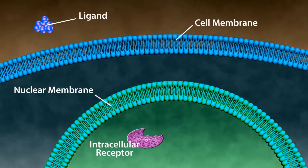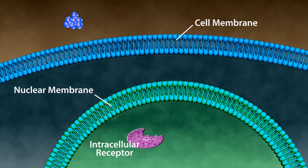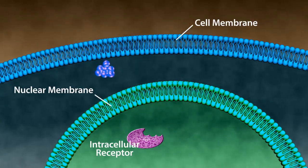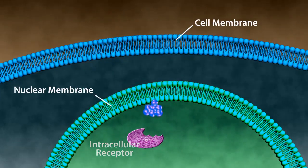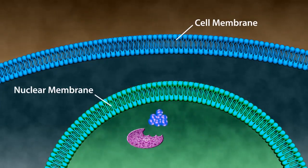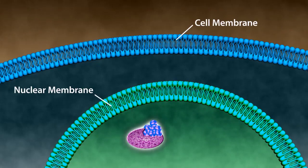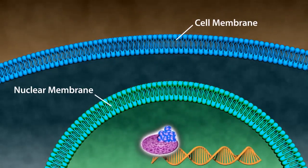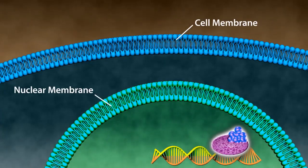Intracellular receptor. Ligands that pass through the cell membrane enter the cell and into the nucleus, crossing the nuclear membrane. After entering the nucleus, the ligand binds to the intracellular receptor. This can alter the transcription of DNA within a cell.